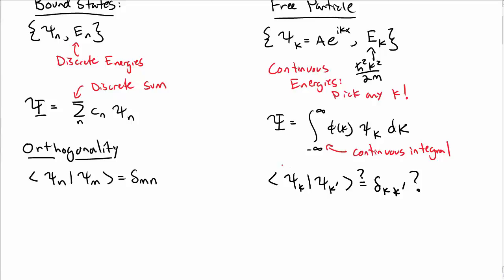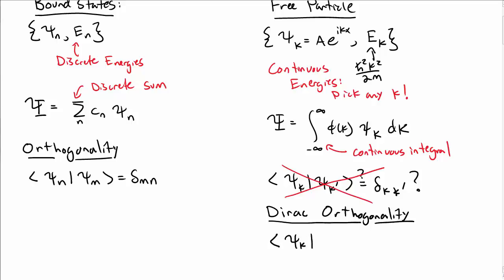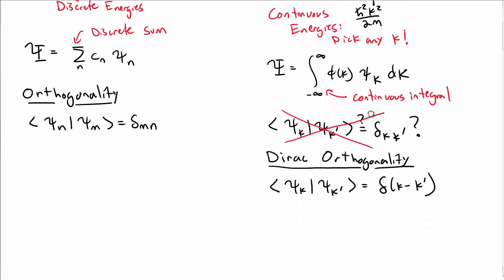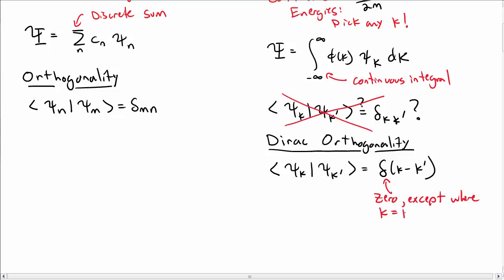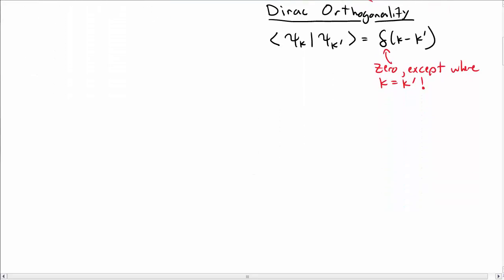It turns out you don't. Since k and k prime are continuous, the Kronecker delta doesn't really make sense here. But we have something very close, which we call Dirac orthogonality. For Dirac orthogonality, the inner product between psi k and psi k prime is a Dirac delta function of k minus k prime. It's zero everywhere except when k equals k prime — and since it's a Dirac delta function, it's infinite there, but we use it inside integrals for it to make sense.